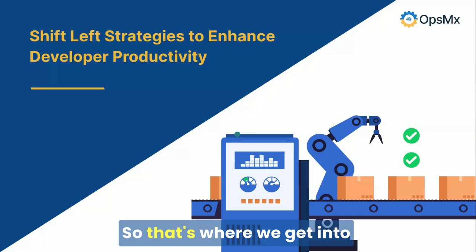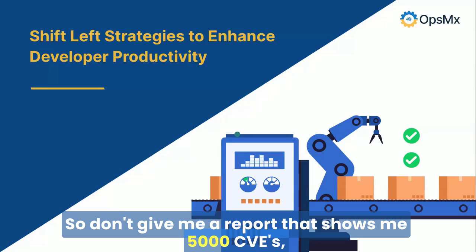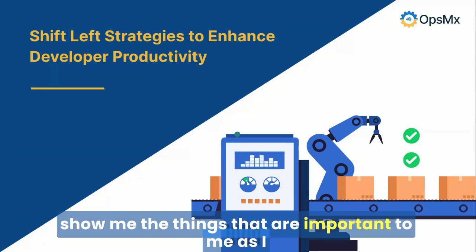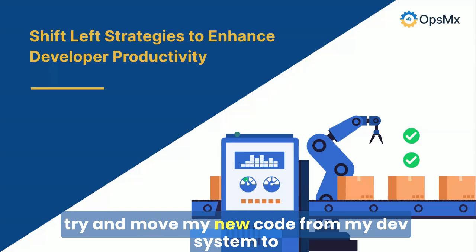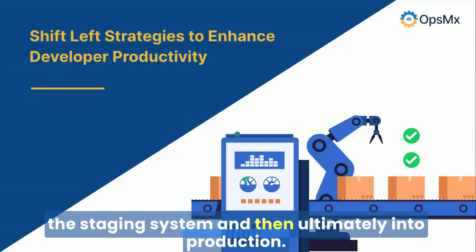That's where we get into things like prioritization and isolation. Don't give me a report that shows me 5,000 CVEs. Show me the things that are important to me as I try and move my new code from my dev system to the staging system and then ultimately into production.